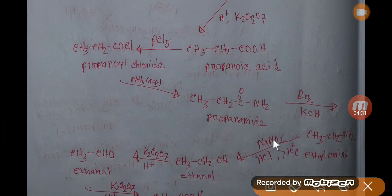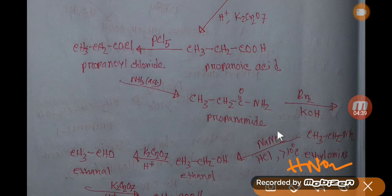If you add here nitrous acid, which is HNO2, which will come from the reaction between HCl and sodium nitrite, this nitrous acid will react with NH2 group, and we will get here OH group. That is, we will get ethanol.